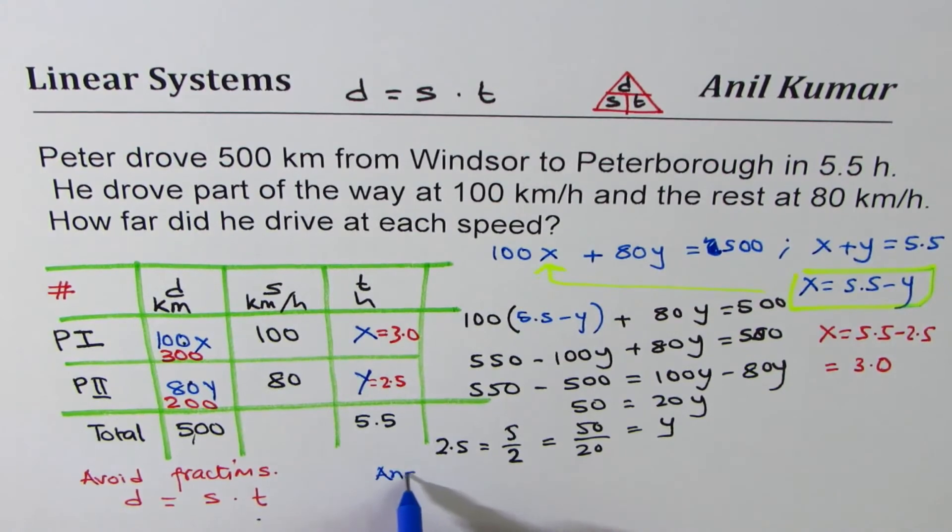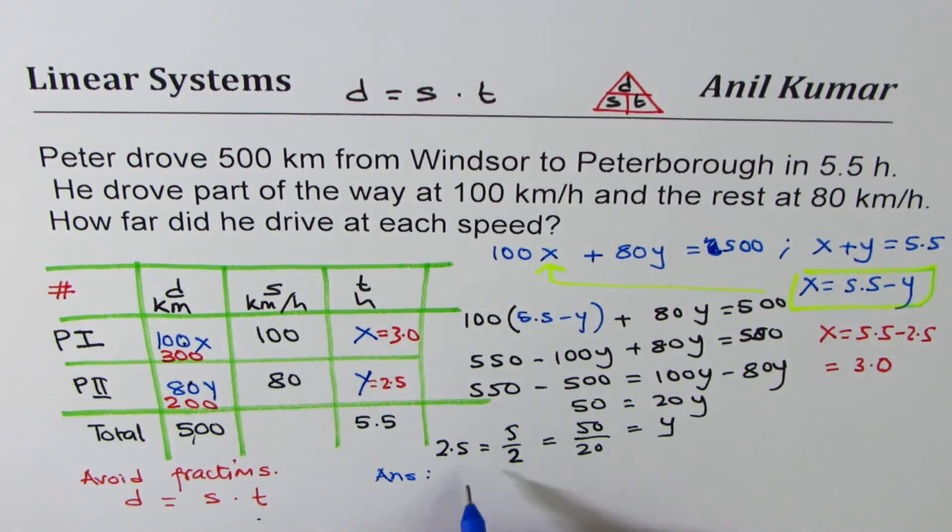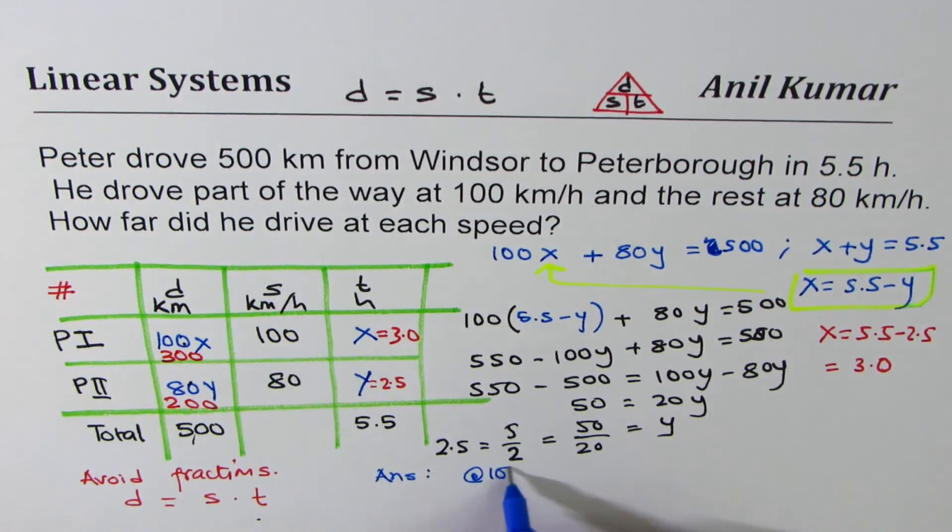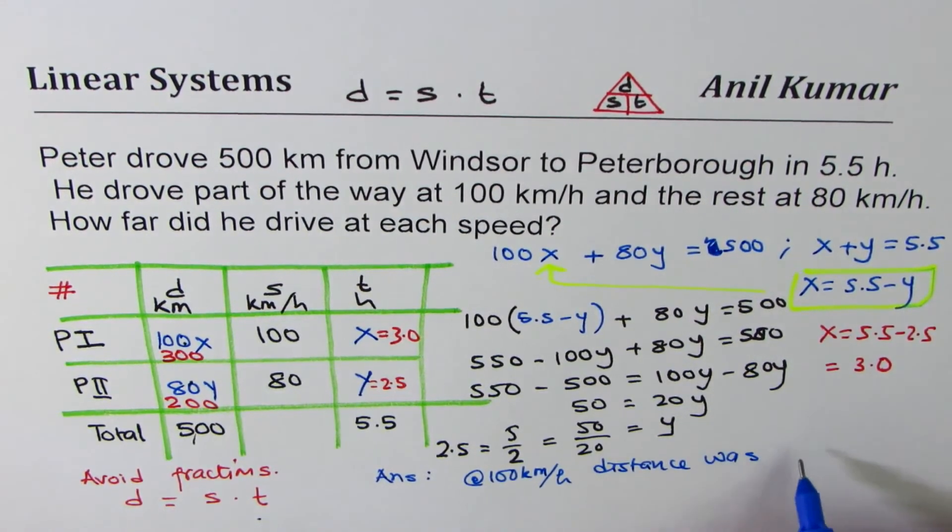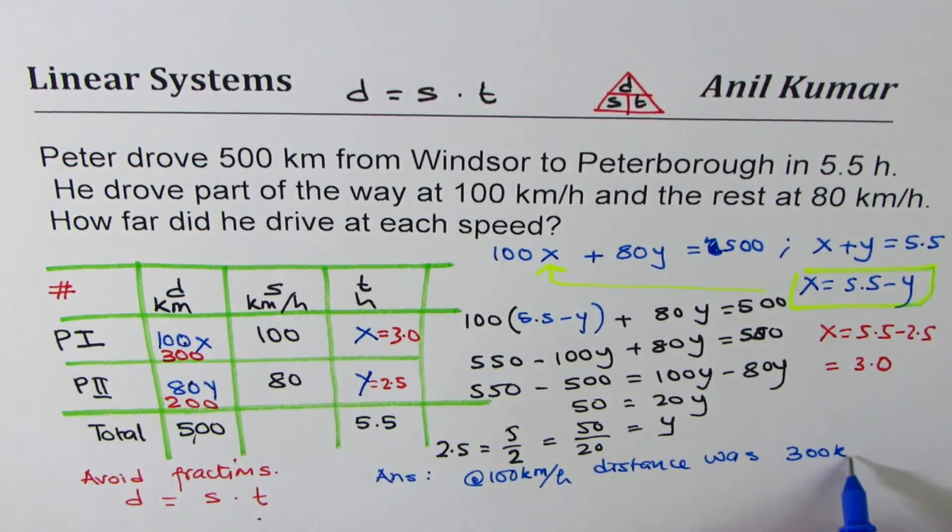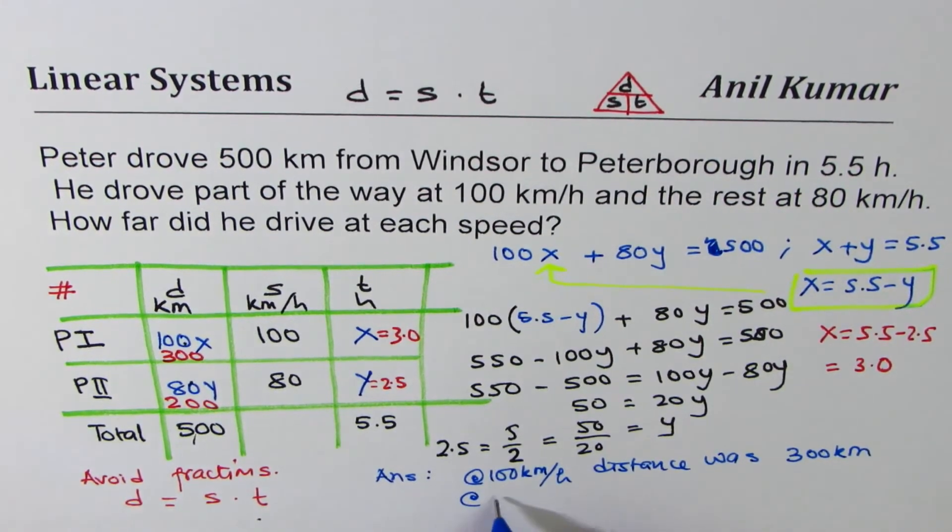We can write down the answer. Part 1 of the distance, that means at 100 kilometers per hour, distance was 300 kilometers. And at 80 kilometers per hour, distance traveled was 200 kilometers.